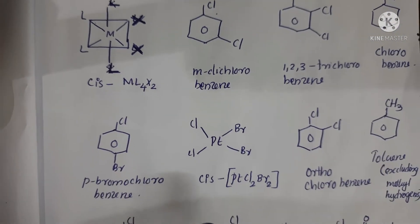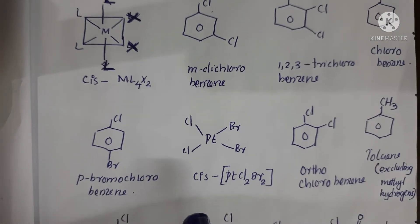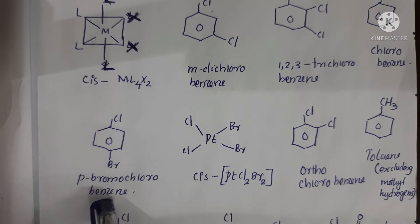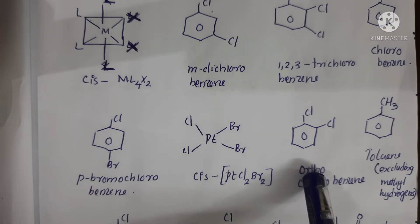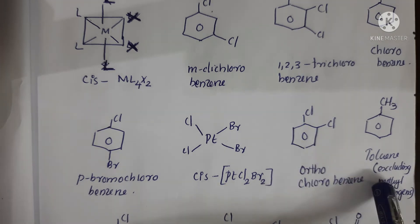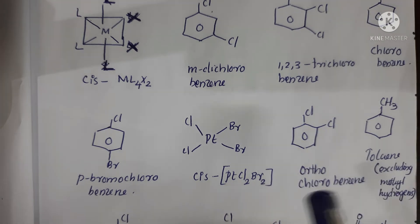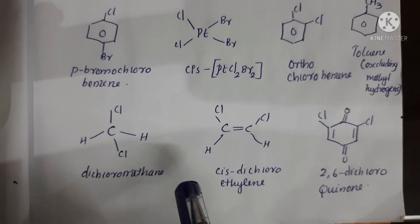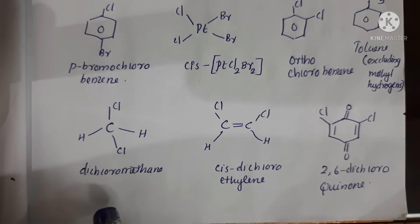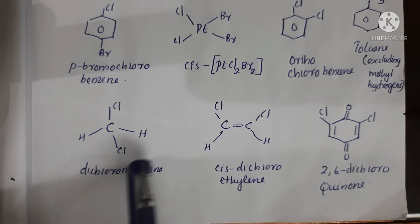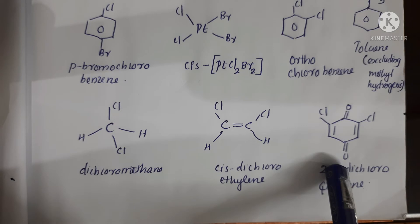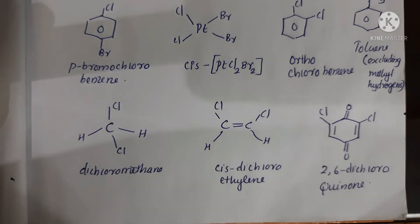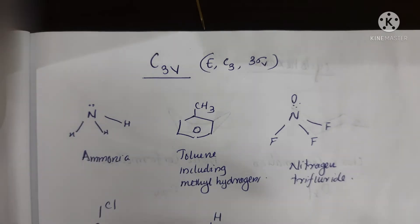Meta-dichlorobenzene is an example of C2V. 1,2,3-trichlorobenzene and chlorobenzene are also C2V point group. Para-bromochlorobenzene is C2V. Ortho-chlorobenzene is C2V. Toluene excluding methyl hydrogens is C2V. Dichloromethane is C2V point group. Cis-dichloroethylene and 2,6-dichloroquinone are also C2V point group.